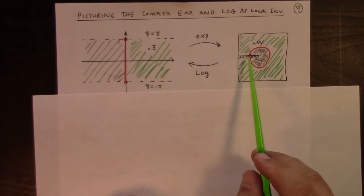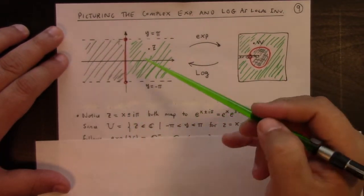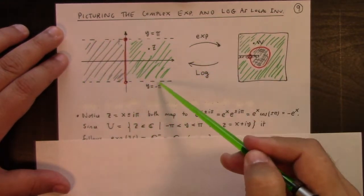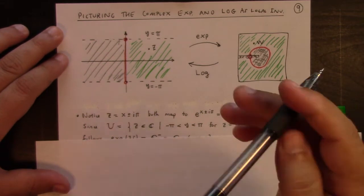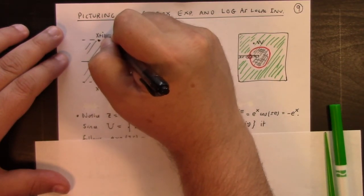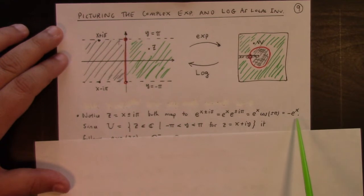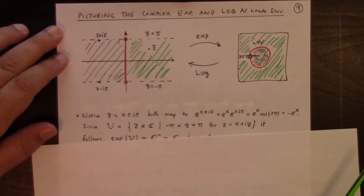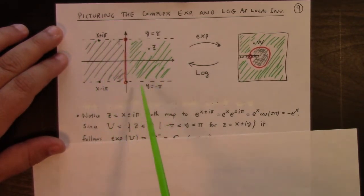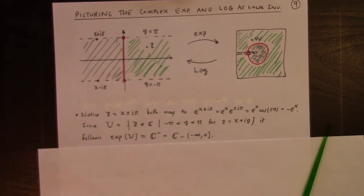If we look at the slit complex plane, because e to the x equals plus or minus i pi, which would be points on the top or bottom horizontal axis. Let me picture those for a second here. Here's x minus i pi. Here's x plus i pi. Both of those map to e to the minus x, which is on the negative real axis. So if we take this horizontal strip with these edges deleted, we map to the slit complex plane. I'll be right back. I'm sorry, guys.